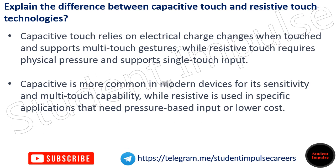Explain the difference between capacitive touch and resistive touch technologies. Capacitive touch relies on electrical charge changes when touched and supports multi-touch gestures, while resistive touch requires physical pressure and supports single-touch input. Capacitive is more common in modern devices for its sensitivity and multi-touch capability, while resistive is used in specific applications that need pressure-based input or lower cost.